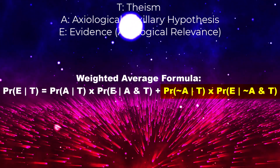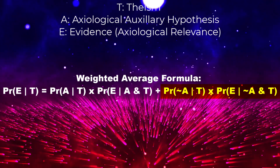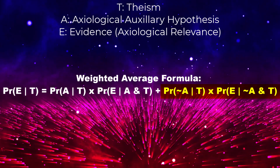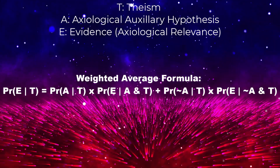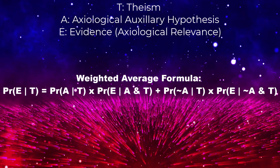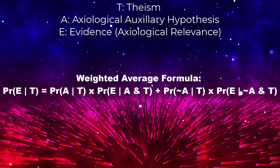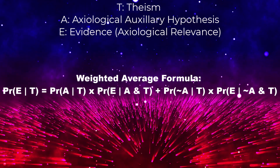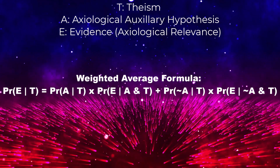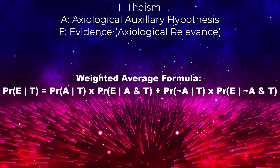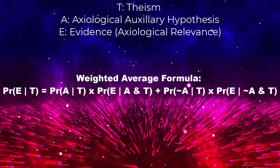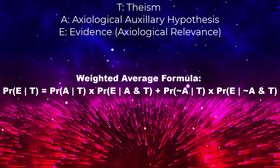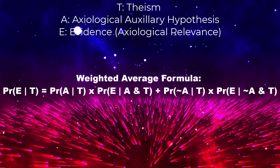Now, here's the key point. When using the weighted average principle with axiological auxiliary hypotheses, the formula does not inherently decrease the probability of theism T. In fact, it allows for a comprehensive evaluation of the evidence and the variables.